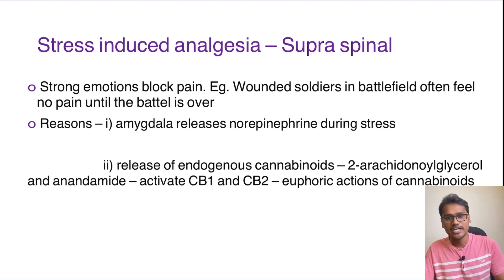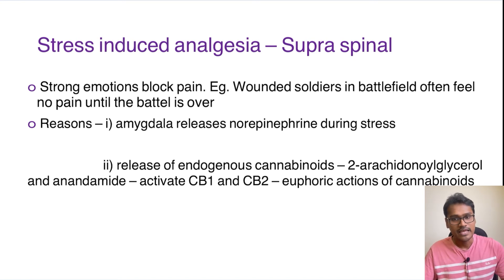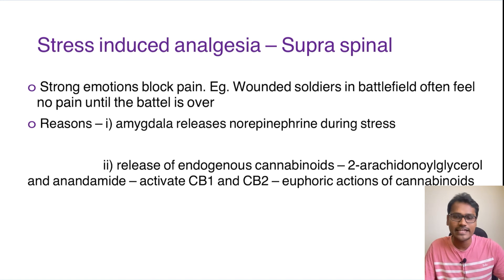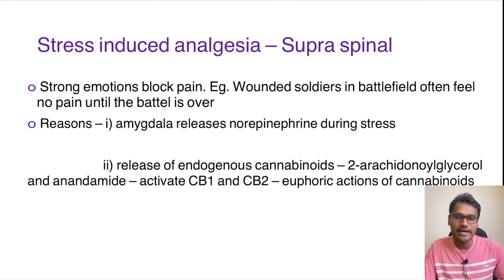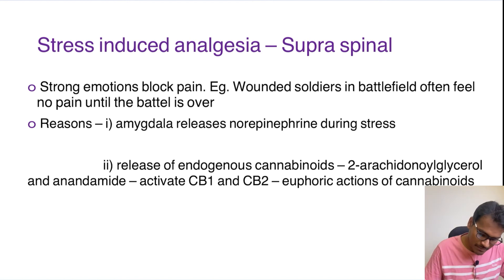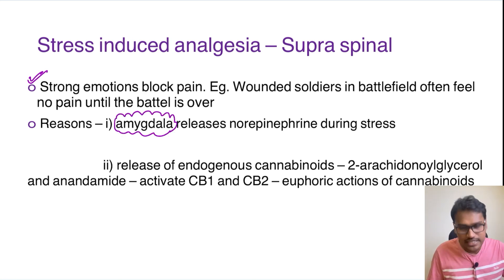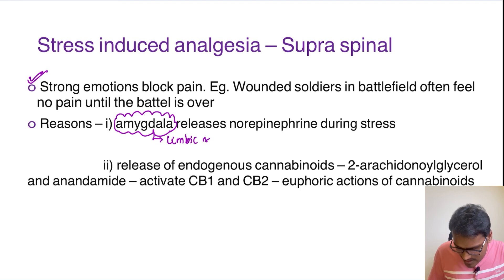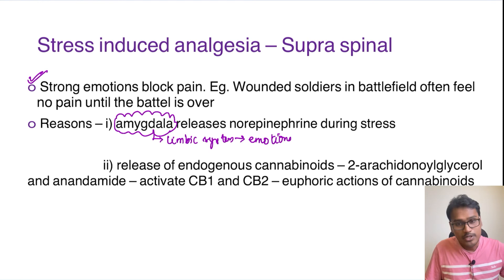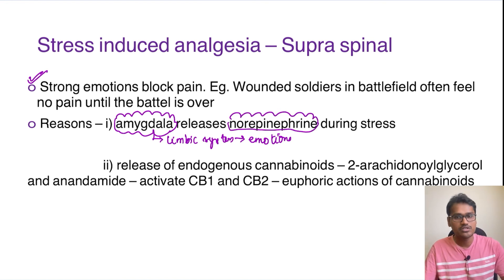The other form of pain reduction is the stress-induced analgesic system. Sometimes whenever a person is under severe stress, they will not be able to feel the pain. The classic example is a soldier fighting in the battlefield — even after a very severe injury, they do not feel the pain until the battle ends. This happens because strong emotions can block pain by stimulating a region in the brain called the amygdala, which is concerned with emotions, and is part of the limbic system.